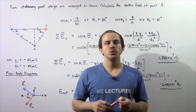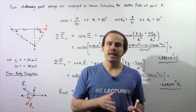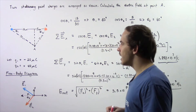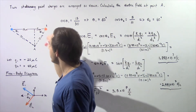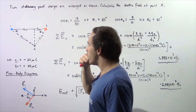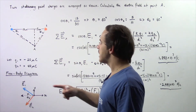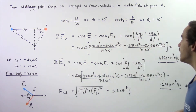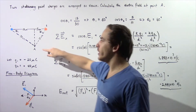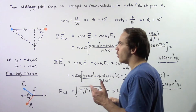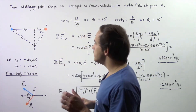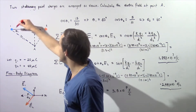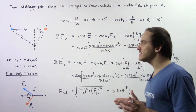Let's look at the following example in which we calculate the net electric field. Two stationary point charges are arranged as shown in the diagram. Point charge 1 has a charge of negative 20 microcoulombs and point charge 2 has a charge of positive 40 microcoulombs. We'd like to calculate the net electric field at point A. The distance from point A to point charge 1 is 30 centimeters, to point charge 2 is 10 centimeters, and the distance between the two charges is 20 centimeters.